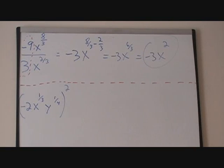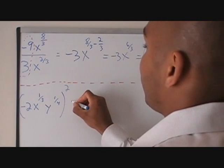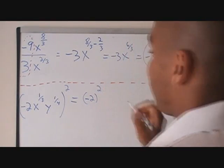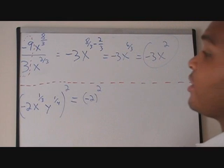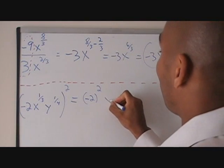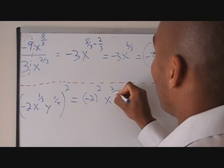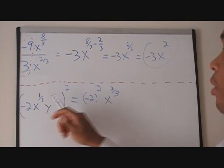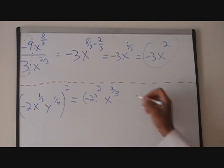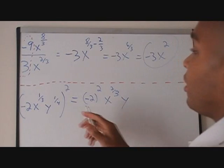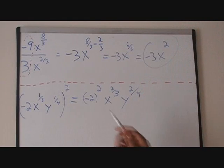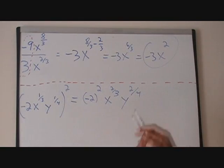For the second problem, I'd like to distribute our exponent. So, we're going to rewrite this as negative 2 raised to the second. The next piece is x to the 1 third — that's going to become x to the 2 over 3. Where did the 2 thirds come from? 2 times 1 third is 2 thirds. And the last piece is y to the 2 over 4 — 2 times 1 fourth is 2 fourths.